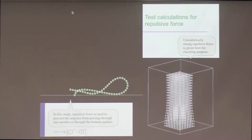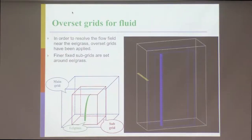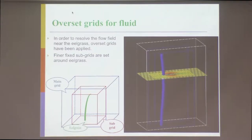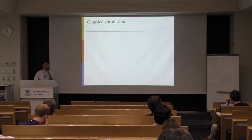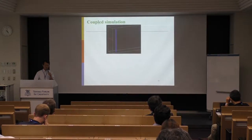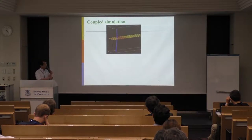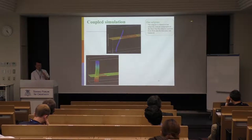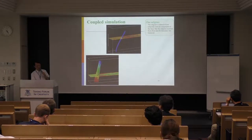To achieve high accuracy around the structure, overset grids are used — a fine mesh is placed around each eel grass plant. In the first simulation test, a single eel grass is almost at rest when the vertical component of the force received from the flow and the buoyancy are balanced.